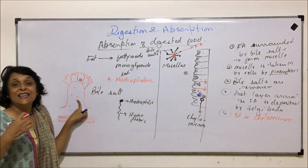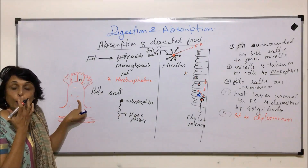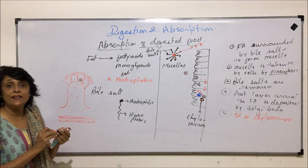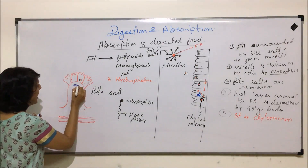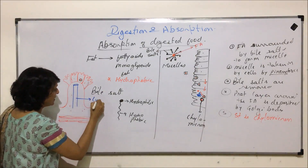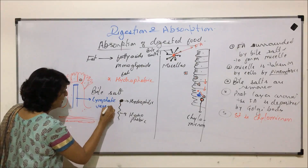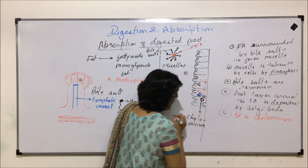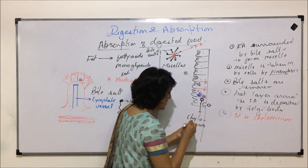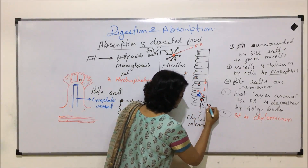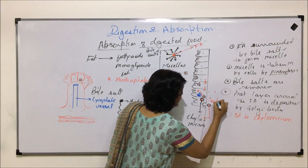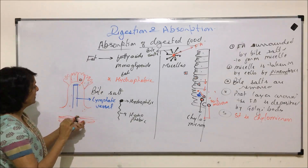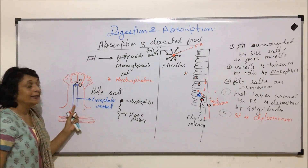This chylomicron would be sent out again. It is a bigger molecule, so it is going to be sent out by exocytosis into the mucosa. A lymphatic vessel is present there and is going to take this chylomicron. An exocytotic vesicle sends the chylomicron out into the submucosa, and this chylomicron comes into the submucosa and is taken by the lymphatic vessel.